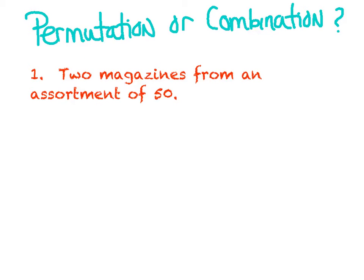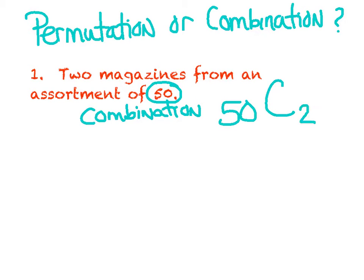Example one, you need to choose two magazines from an assortment of 50. Combination or permutation? Well, was I specific about the two magazines you had to pick? Did I give you a position, a placement? I don't think so. You just have to pick any two that you want out of 50. So this is definitely a combination. The order does not matter. Now mathematically, how would I set that problem up? How many do you have to choose from? 50. Combination. And how many do you want? 2. So I would just use 50c2 to get my answer.